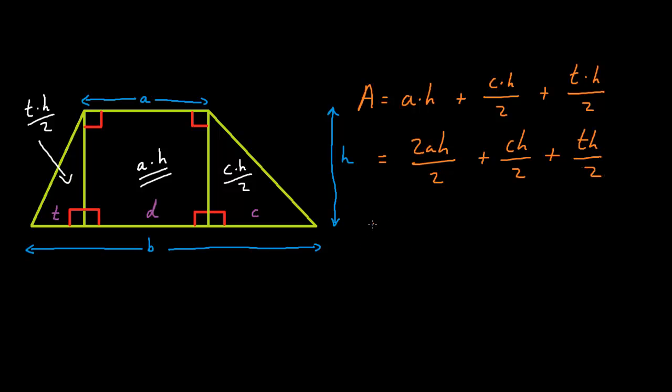If we factorize this formula, we get H over 2 multiplied by 2A plus C plus T.